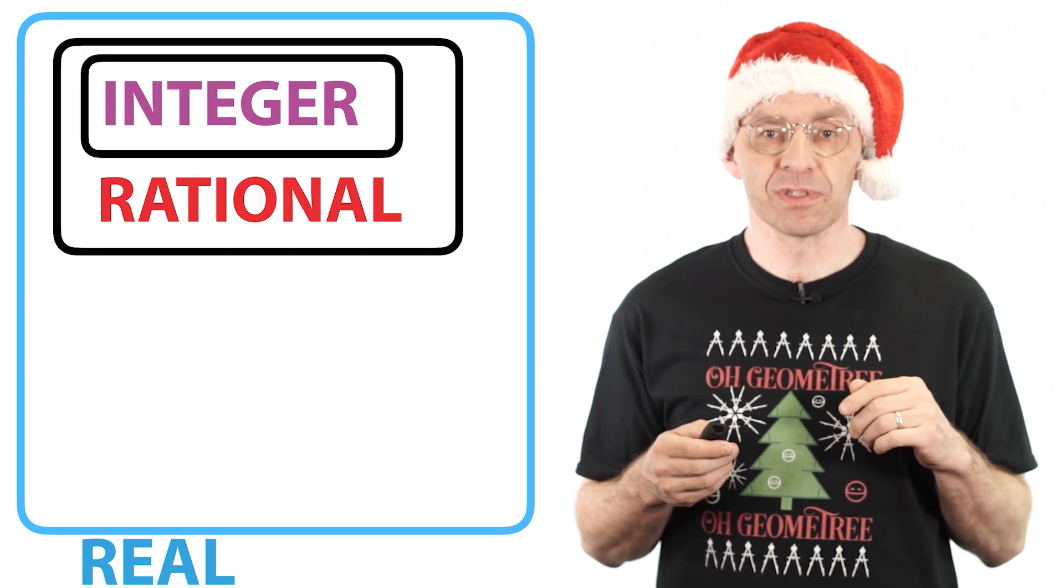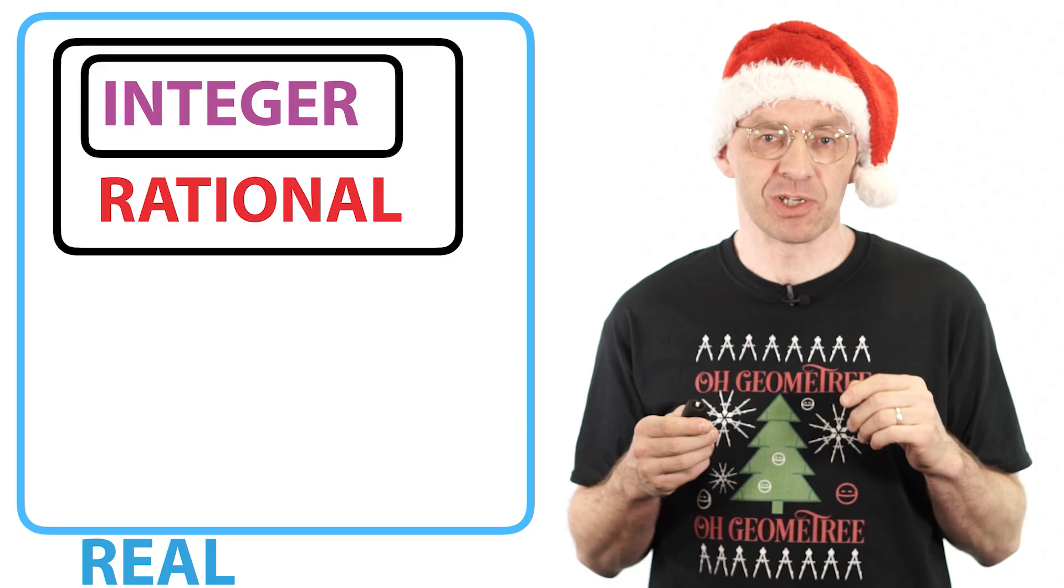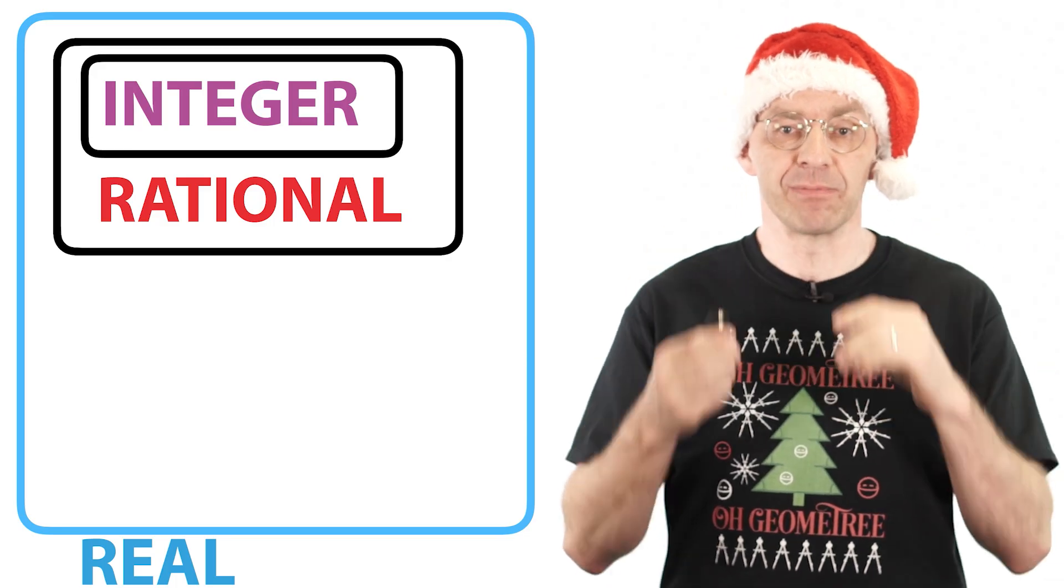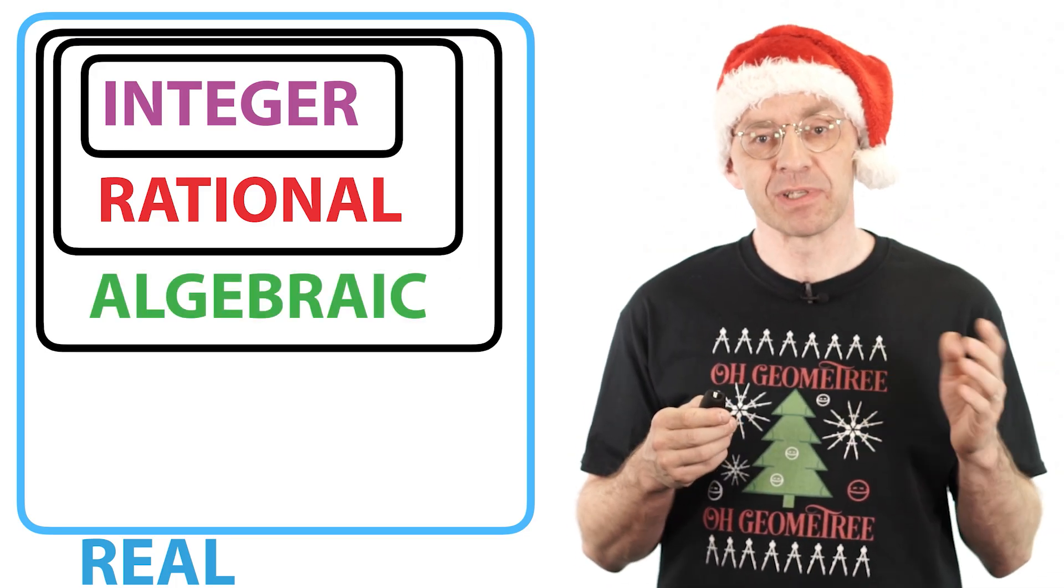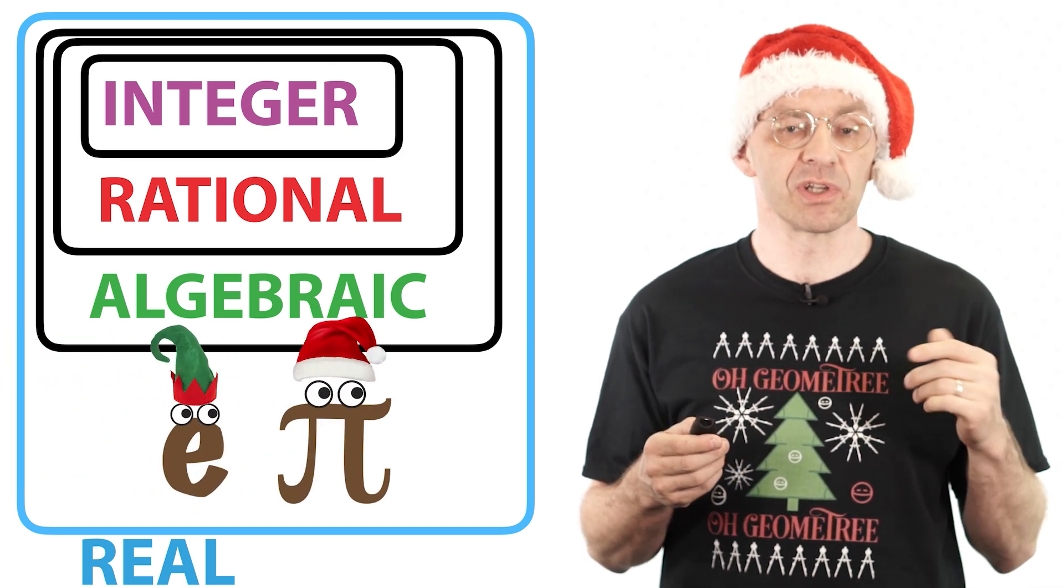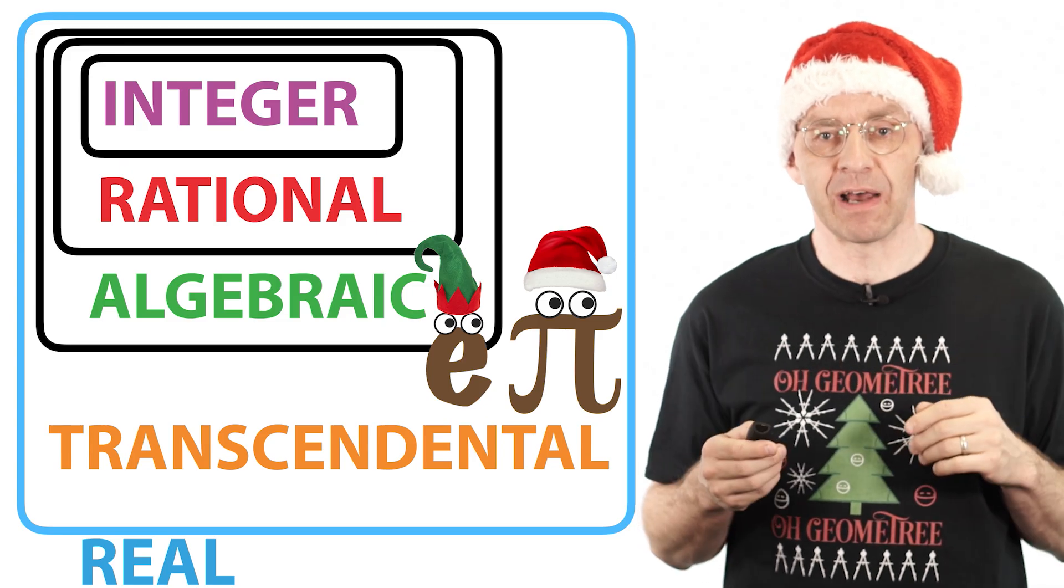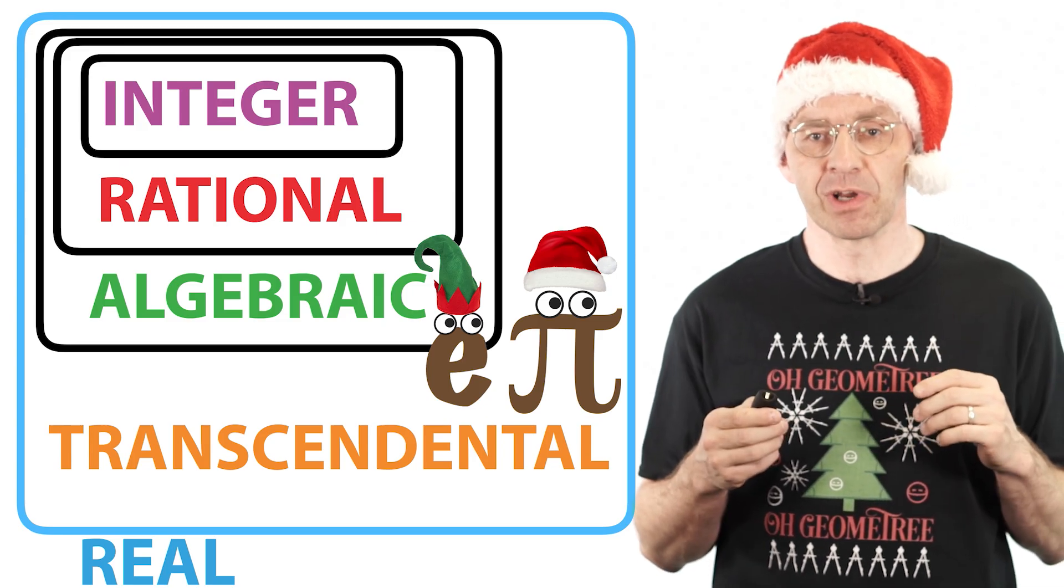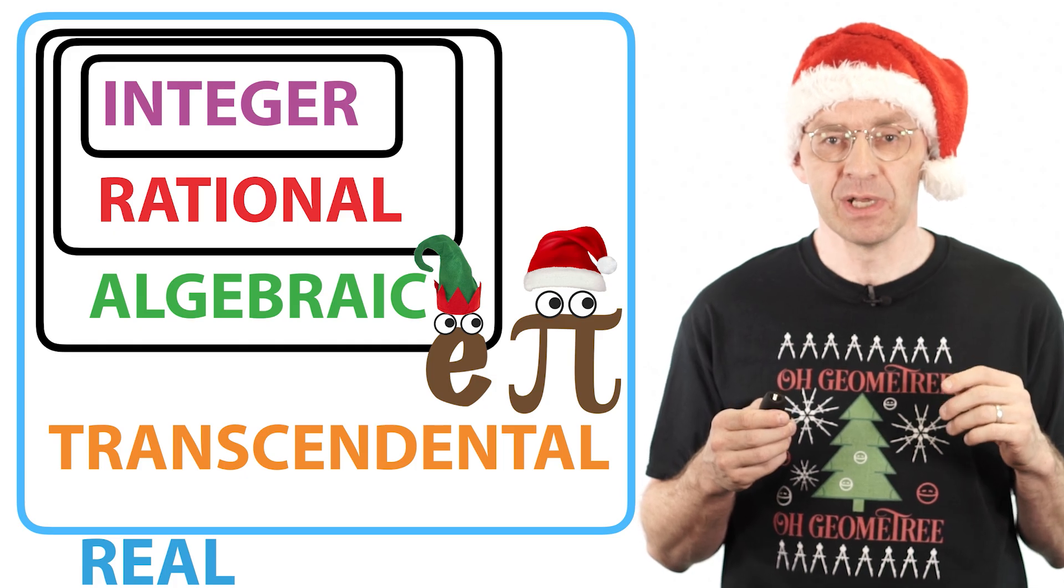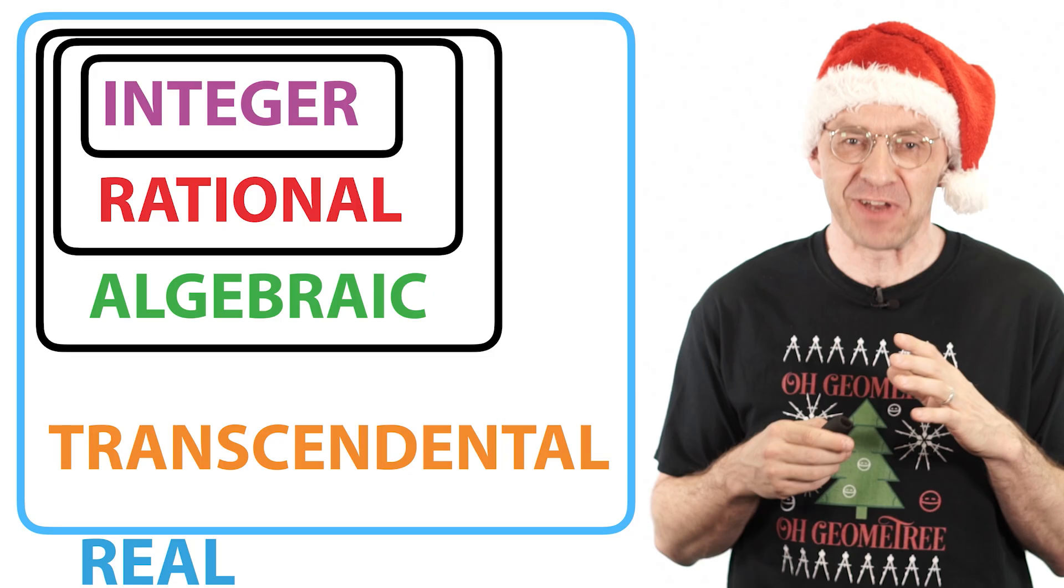Anyway, the real number solutions to polynomial equations like this are super important and have a special name. They're called the algebraic numbers. Numbers that are not algebraic, such as e and pi, are called transcendental numbers. So while the root theorems are fantastic tools for determining the irrationality of an algebraic number, they have no use for transcendental numbers.